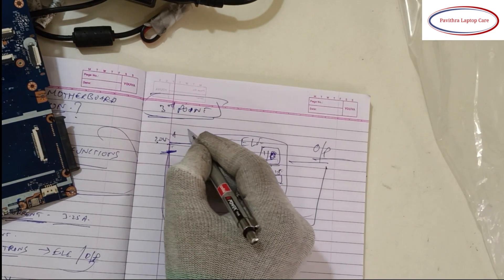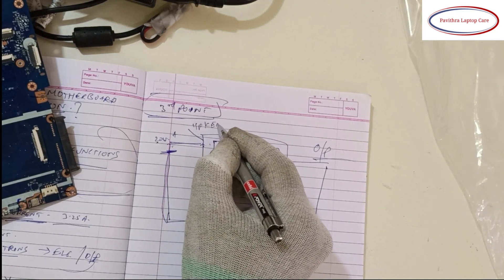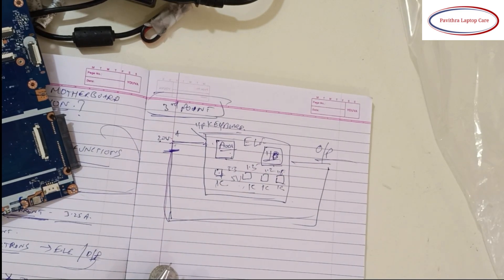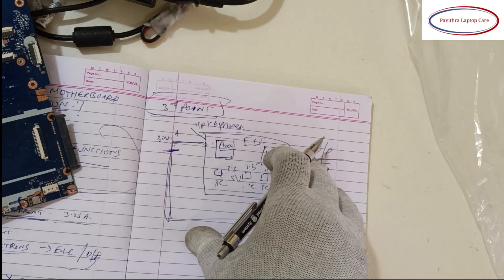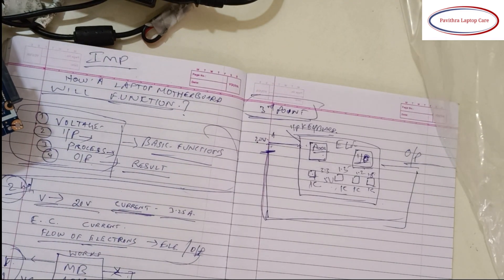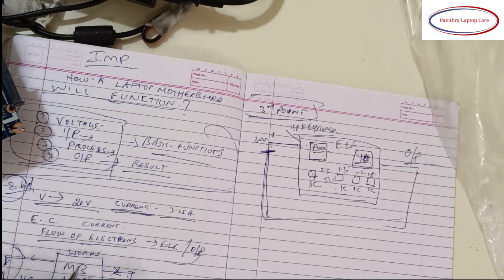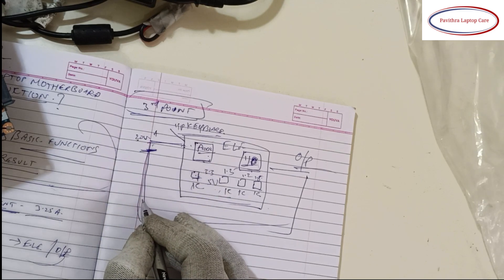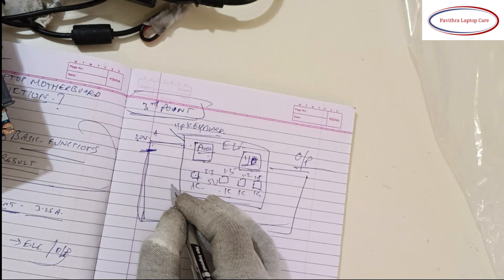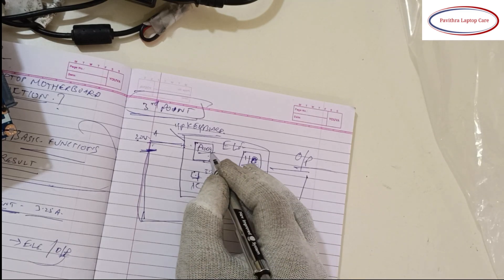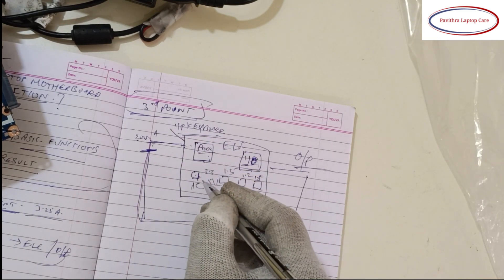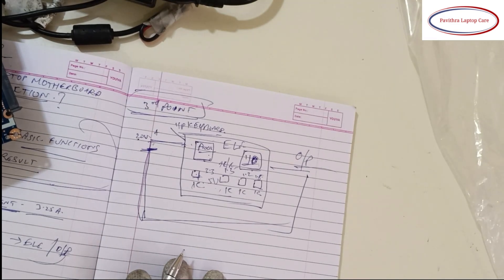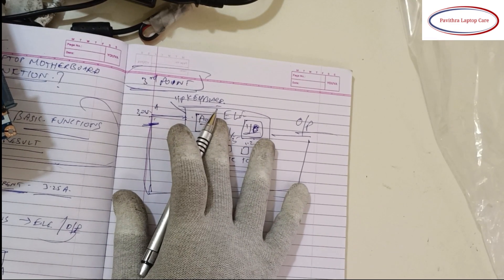Input through the keyboard is processed and gives the output. This is a very important point. In the first point, the flow of electrons goes from negative to positive through the load — it works. Second, 20 volts is given as input. Inside the motherboard, many electronic components convert these 20 volts to appropriate voltages, AC or DC, whatever may be required, and give the appropriate result. This is the third point.